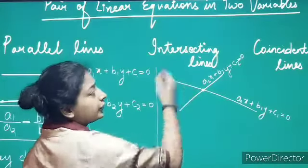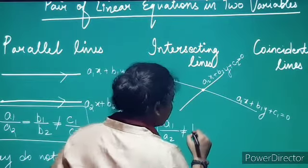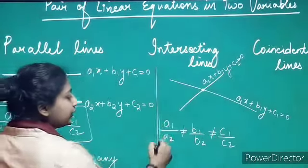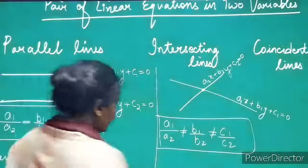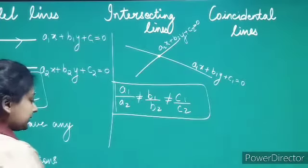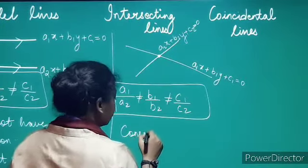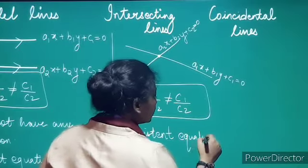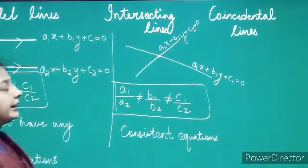The condition for the intersection of two lines is a1/a2 ≠ b1/b2. Since these lines have a solution, the pair of equations is called consistent. Equations which have a solution are called consistent equations.